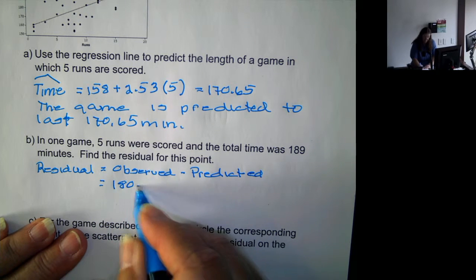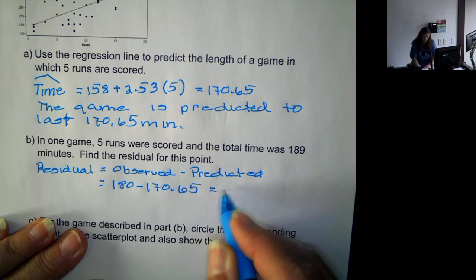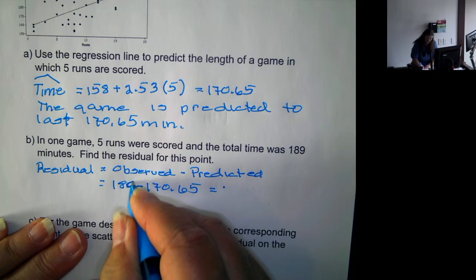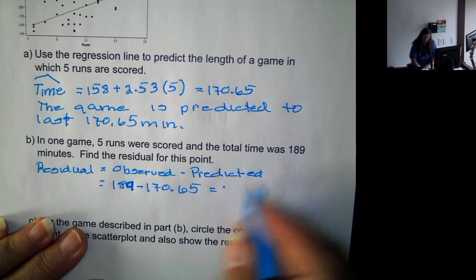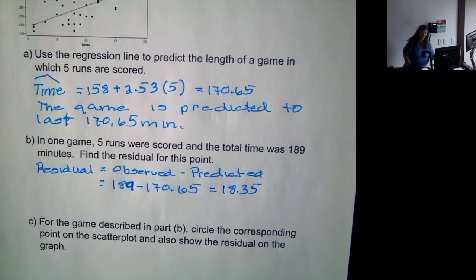So in this case, it's 189 minus 170.65 or 18.35. So we predicted based on the regression line that the game would last 170.65 minutes. If five runs were scored in this particular game, it actually lasted 189 minutes. So the residual or the difference between what happened and what we thought would happen is 18.35.